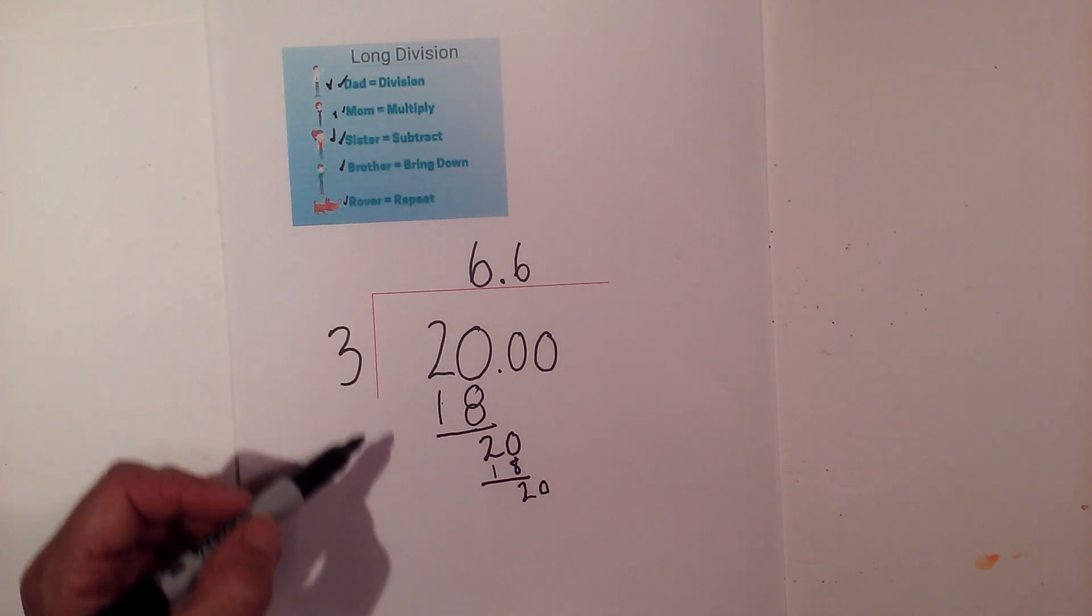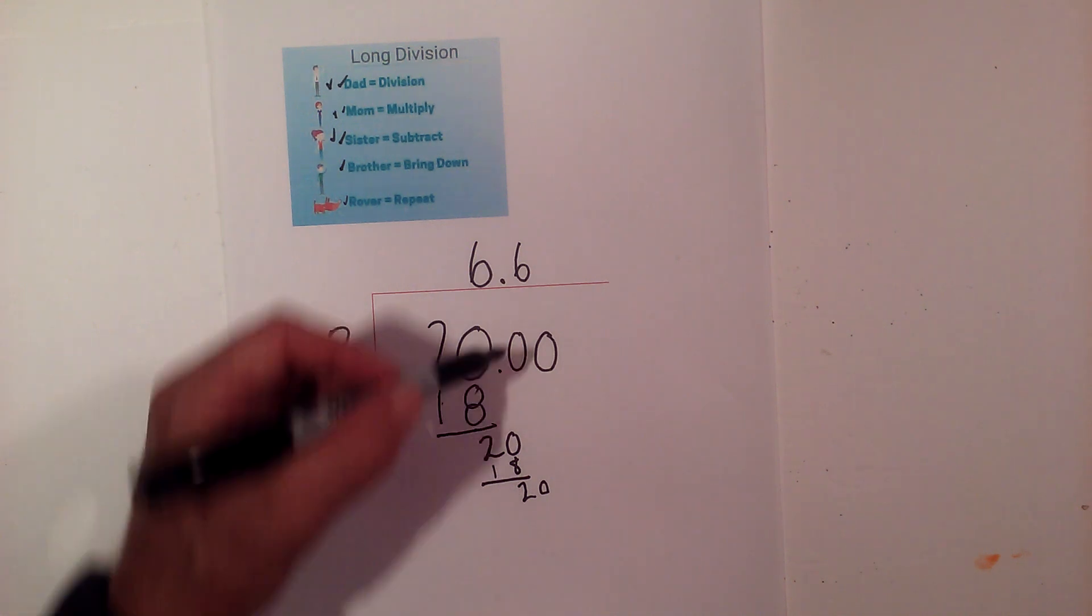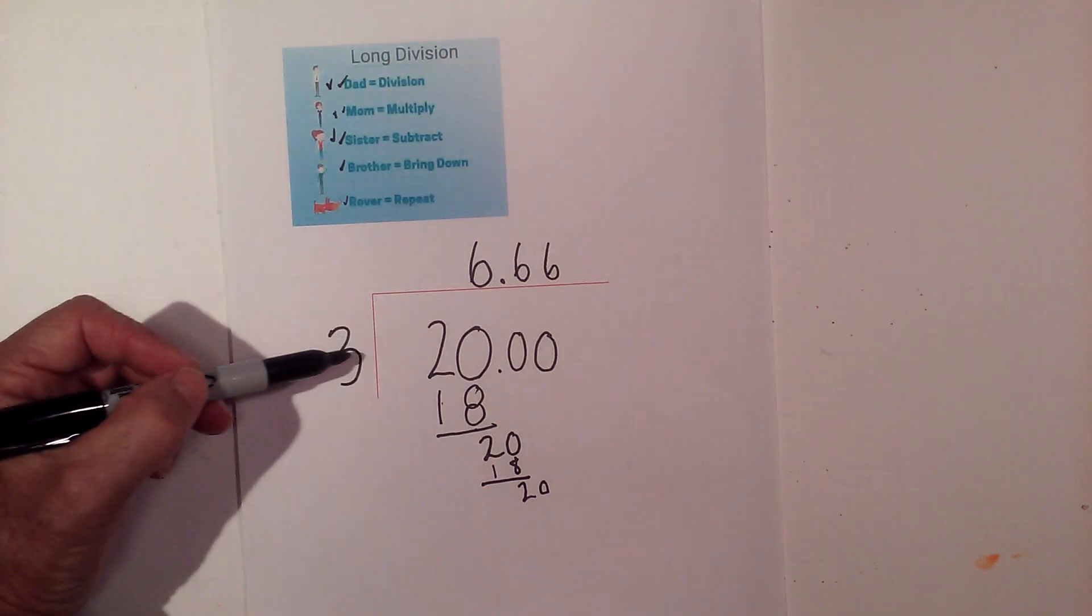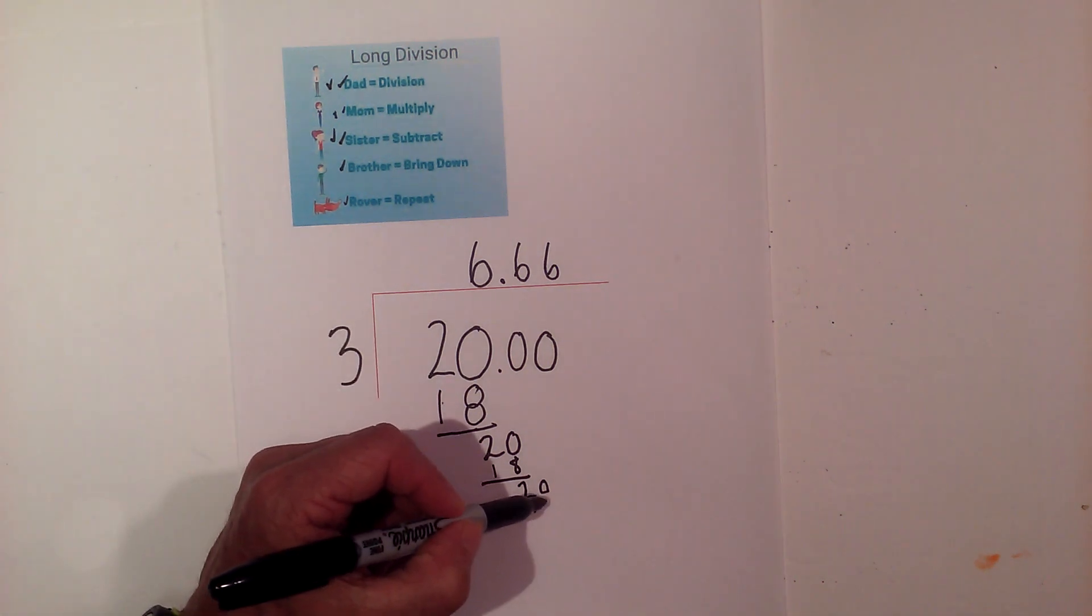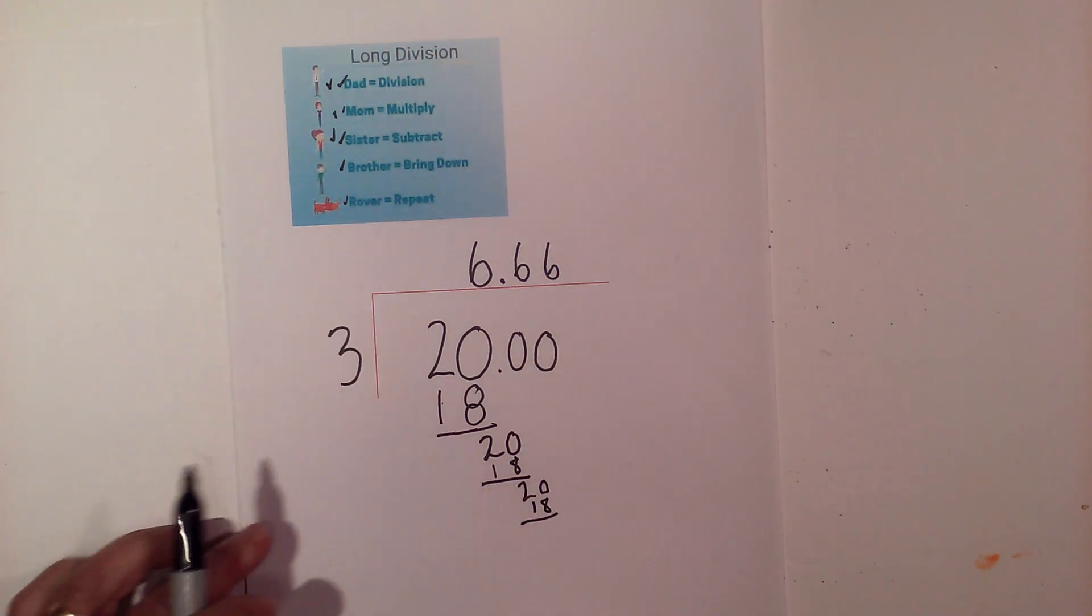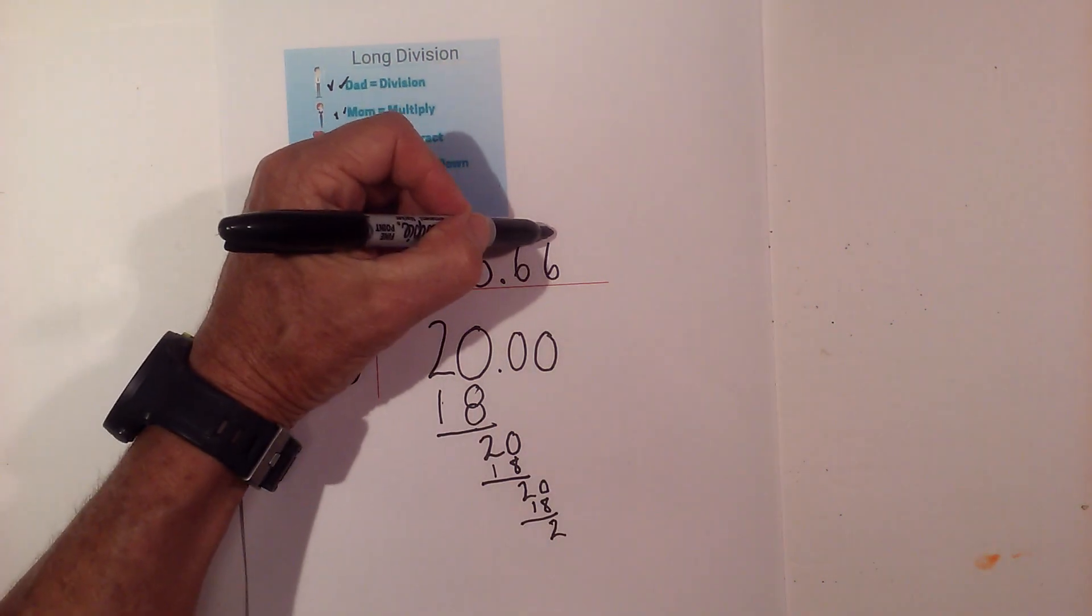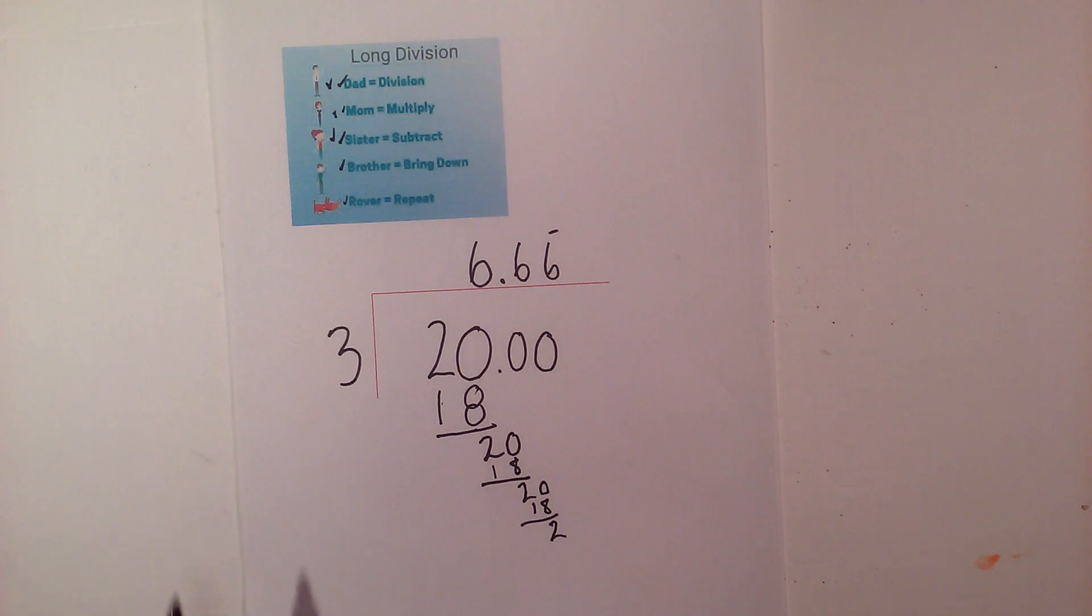Now division. 3 goes into 20 six times. Multiply. 6 times 3 is 18. Still on the page. Subtract is 2, and this is going to repeat. So I'm going to put a bar over this saying that it repeats. So there we go.